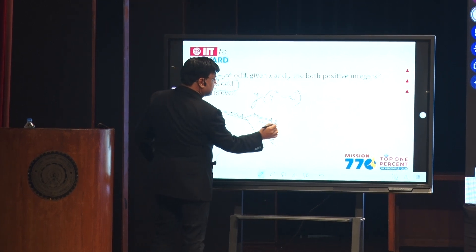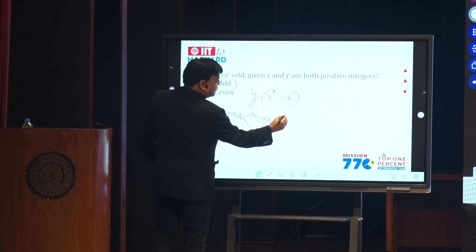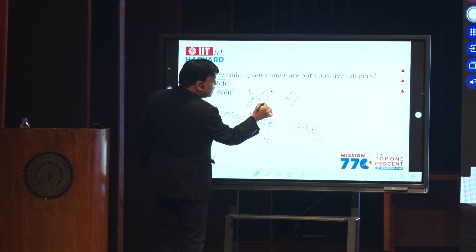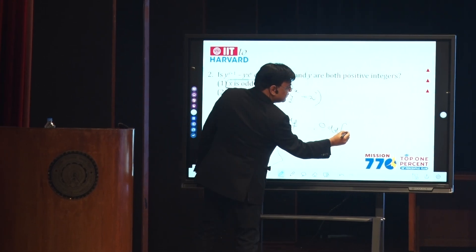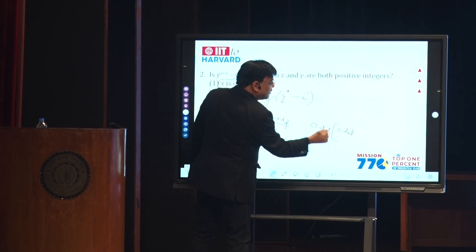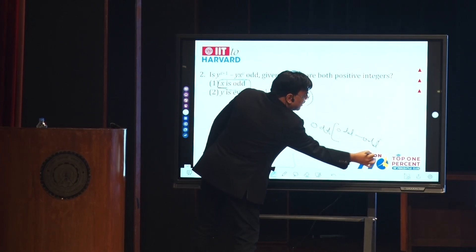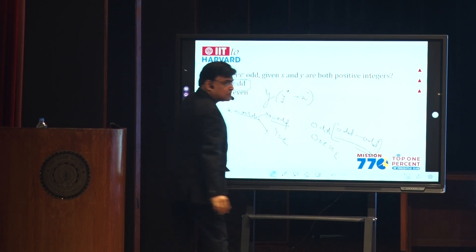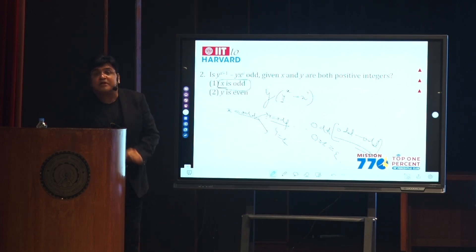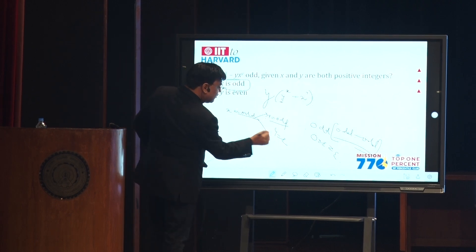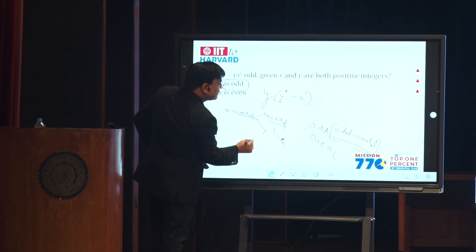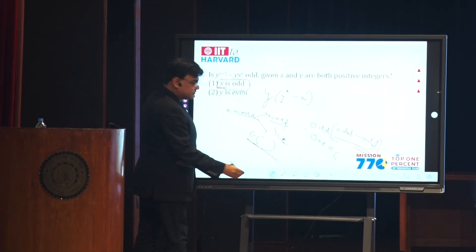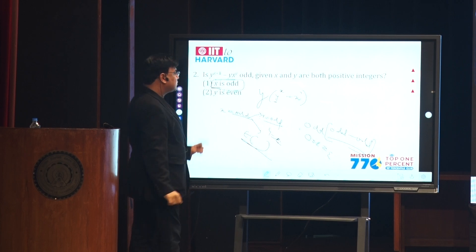Let's assume x is odd and y is odd. If x is odd and y is odd, this becomes odd times odd — odd to the power of anything is odd, and odd minus odd is even. So odd times even is even, giving a confirmed even result. Now if x is odd and y is even, even times anything is again even.